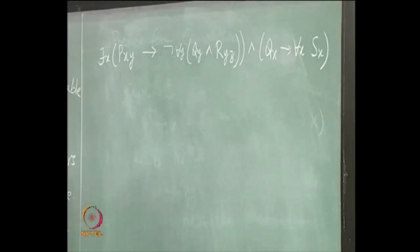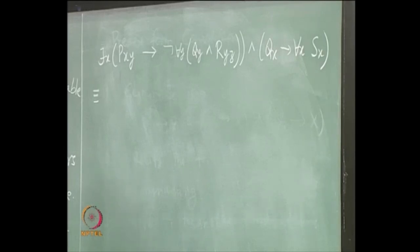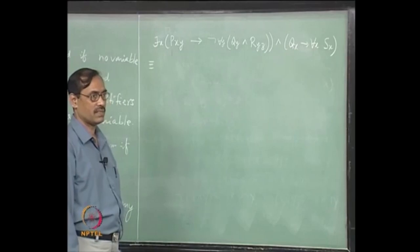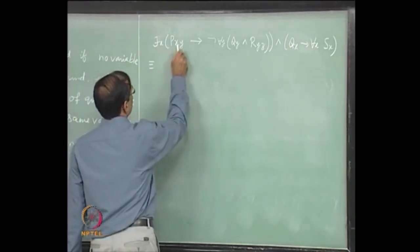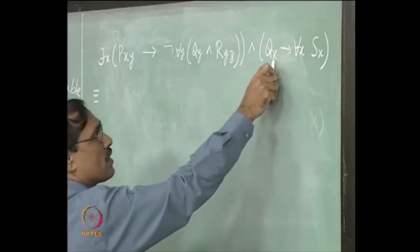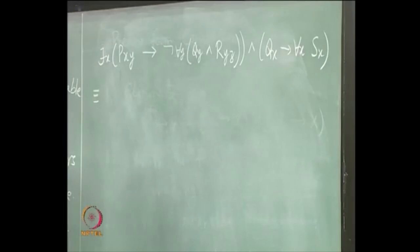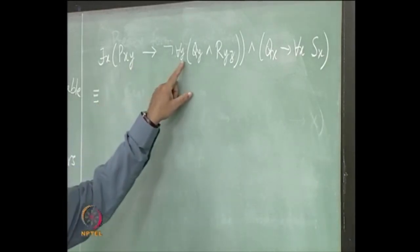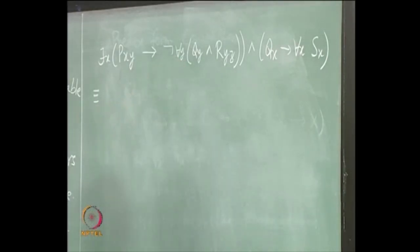We start with a formula. Our procedure says: if there is any biconditional, first eliminate it. If there is none, skip that step. Next, we rectify. We check: x is bound here, x is free here — so all bound occurrences of x have to be renamed. What about y? Y is free here and y is also bound, so the bound occurrence of y also has to be renamed. Z is only free and not bound, so we can leave it as it is.